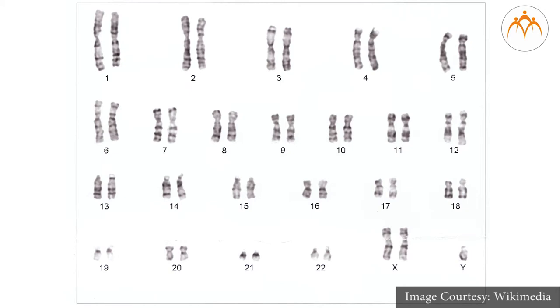Everybody has 22 pairs of chromosomes called autosomes and two more chromosomes called sex-linked chromosomes. Females have two X chromosomes and males have an X and a Y chromosome. Inherited traits and disorders can be divided into three categories: unifactorial inheritance, sex-linked inheritance, and multifactorial inheritance.